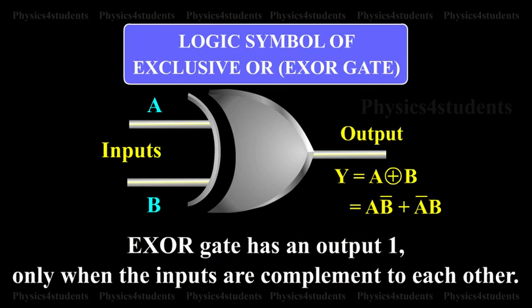XOR gate has an output 1 only when the inputs are complement to each other.